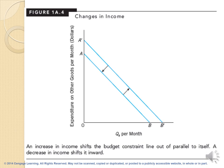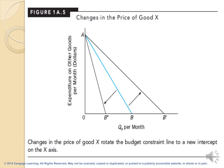The budget constraint line can change by changing income or changing the prices of the two goods. An increase in income will shift the budget line outward, parallel to itself; a decrease in income will shift it inward, also parallel to itself — so AB shifts out to A'B' when income increases. If we have a change in the price of good X (on the horizontal axis), changing the price of good X rotates the budget constraint line to a new intercept on the X-axis.